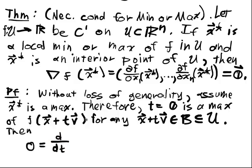So this is a necessary condition. The necessary condition for the first order is that d/dt f(x+tv) evaluated at t=0 is zero. That's our first order condition.